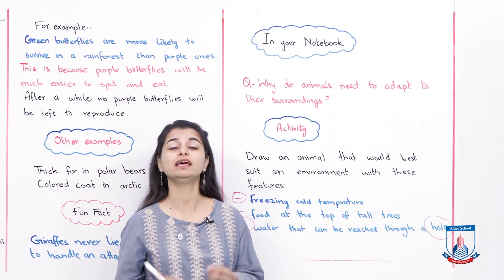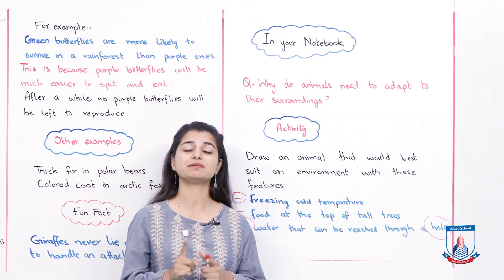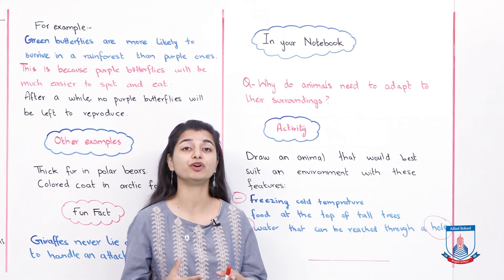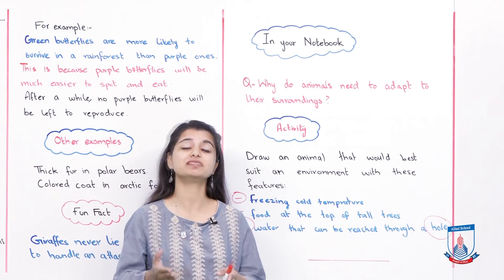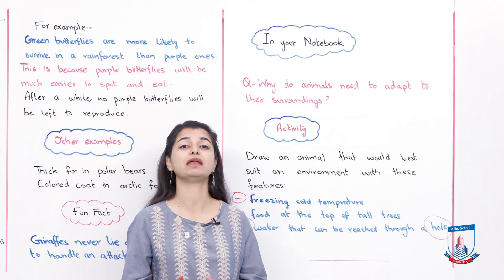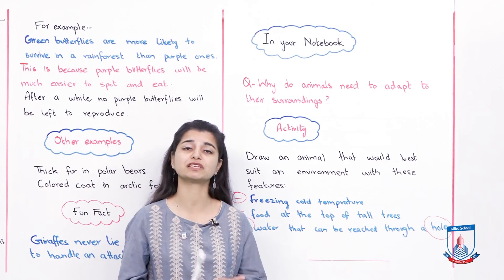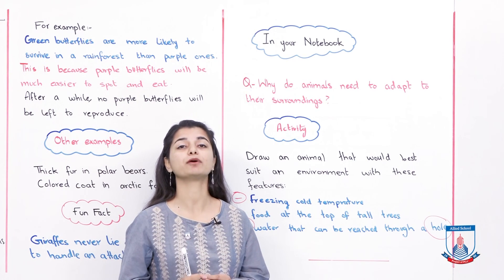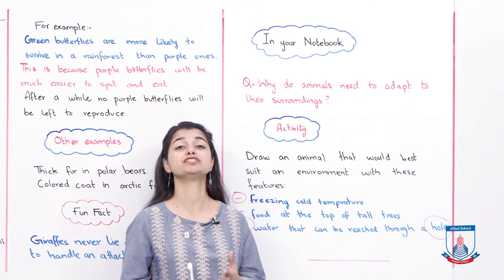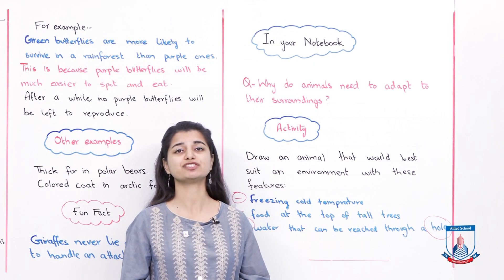To summarize what we talked about in this subunit: animals adapt because they keep changing to suit their environment for survival. The animals that best suit their environment survive longer and reproduce. At the end, we have only the animals with the best features remaining, and those that could not adapt became extinct. In the next class we will talk about movement and reproduction, and our chapter will be finished. Stay tuned for the next lecture, and take care of yourselves.